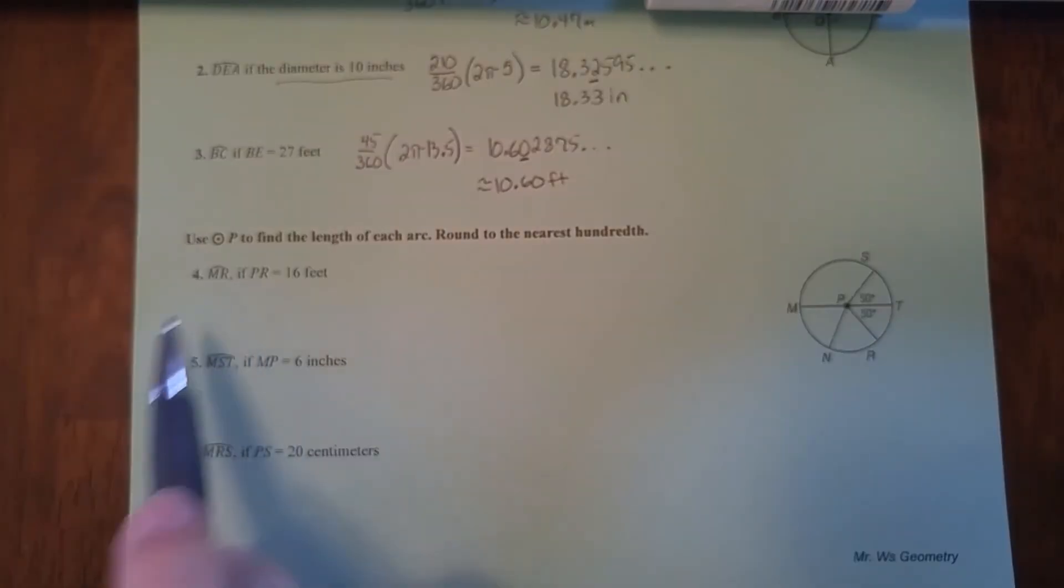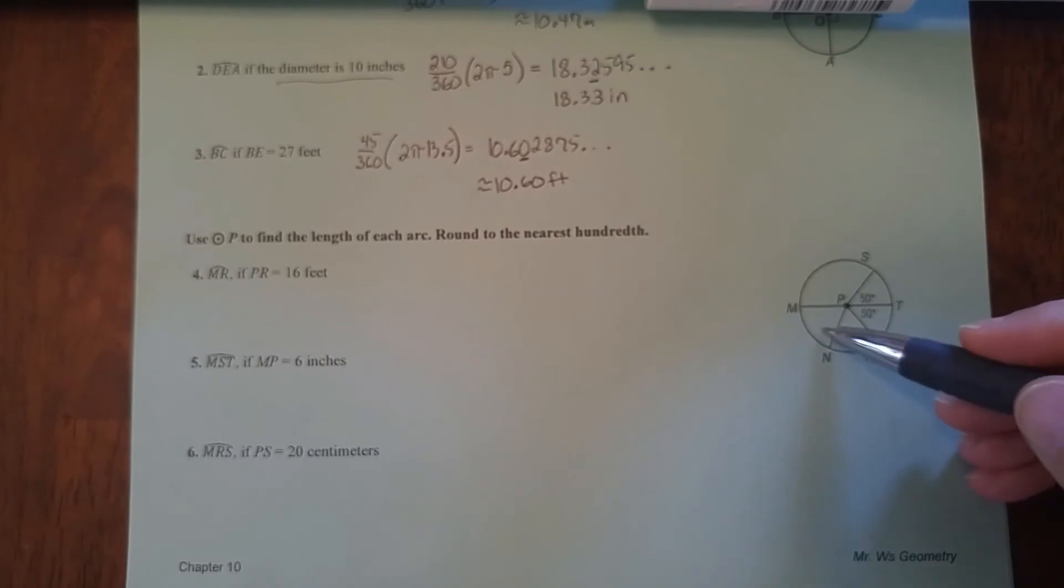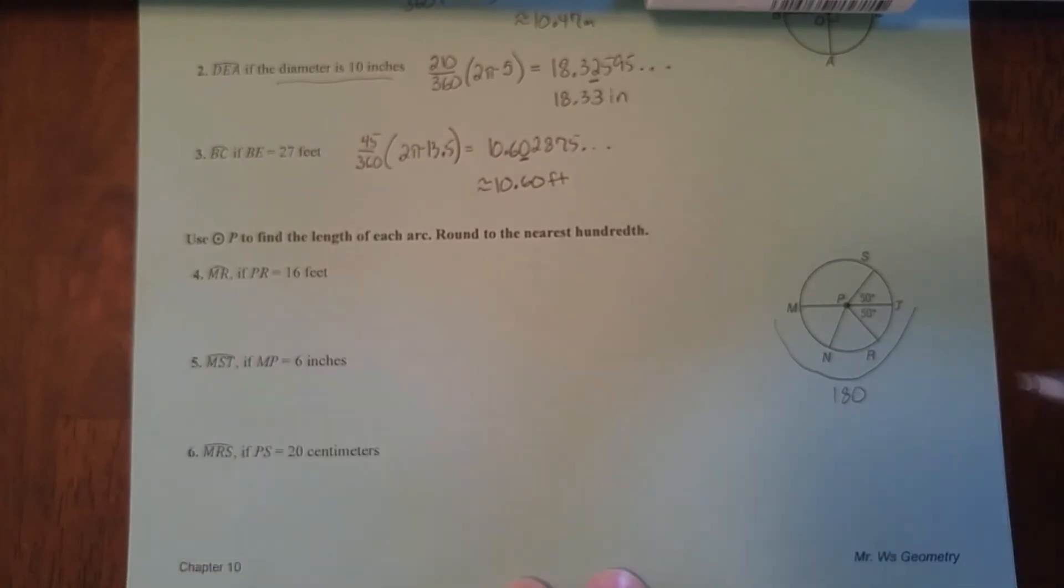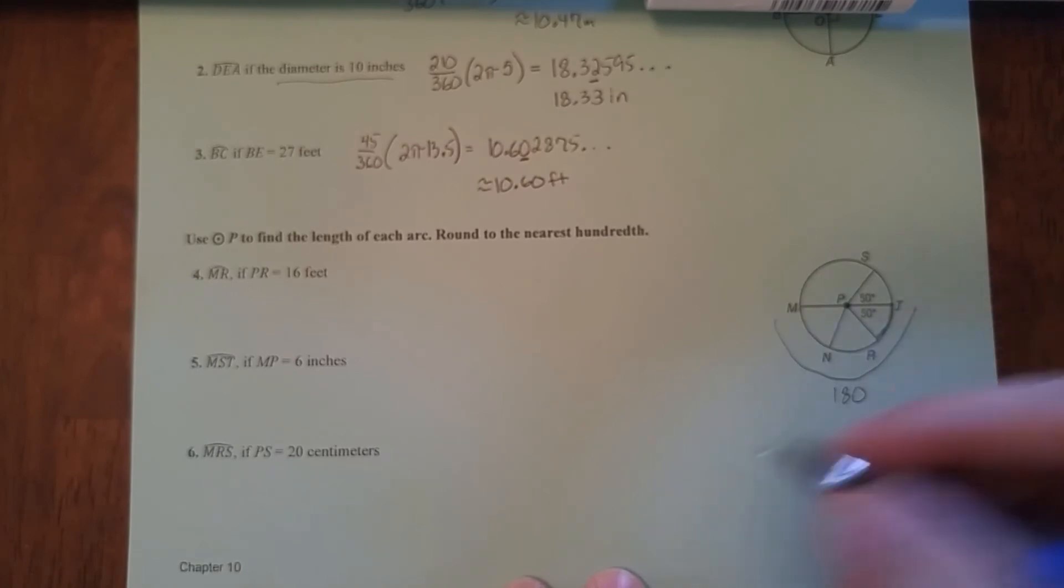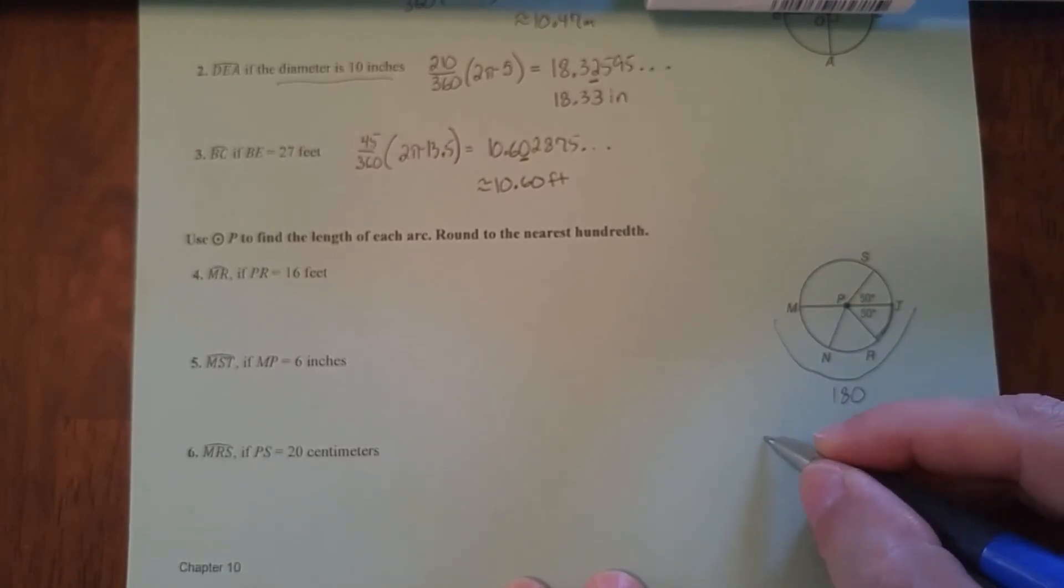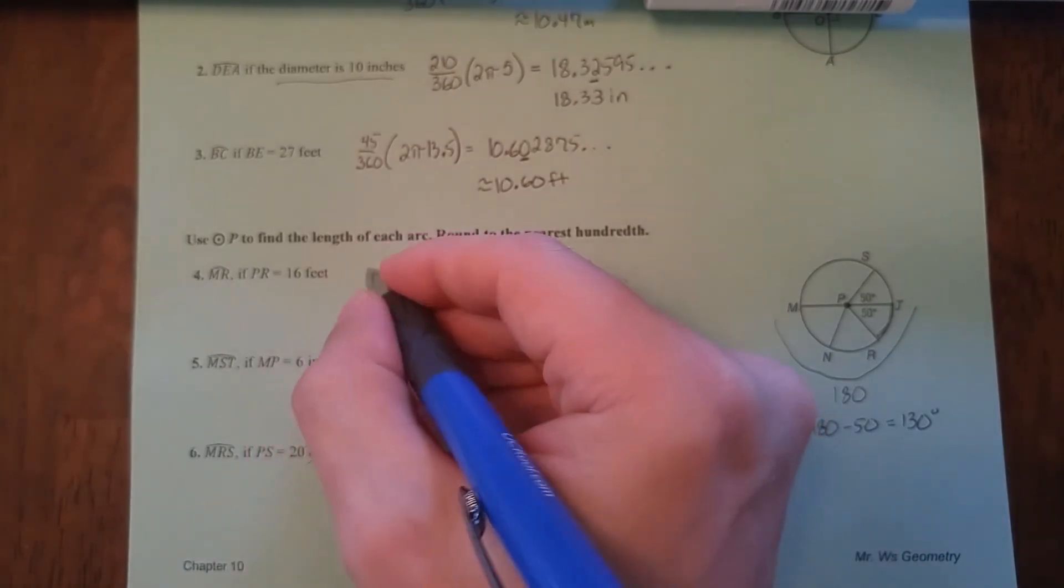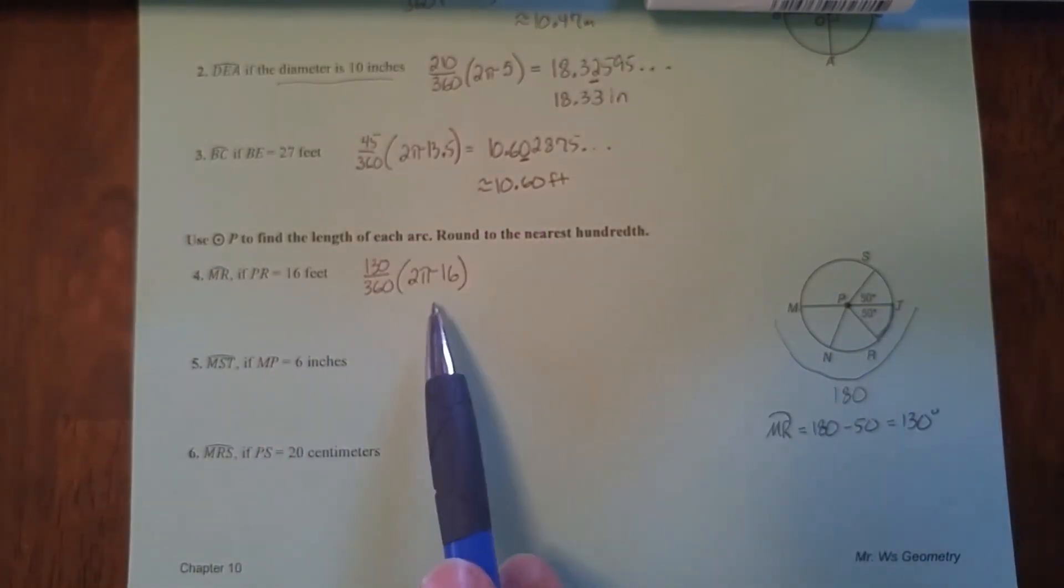Okay, let's move on to the next one. Here we're asked about arc MR. Arc MR is right here. Now we don't have measurements here, but we do have this measurement. Take a look at MT. See how that's a diameter? If that's a diameter, that makes MRT a semicircle. And a semicircle, you should remember, is 180 degrees. Now they're asking about MR. MR is the semicircle minus this part right here. So in other words, MR is 180 minus 50. So arc MR is 130.